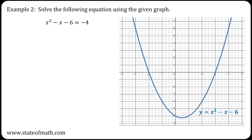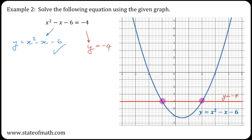For example 2, for the left-hand side I have y equals x squared minus x minus 6, which is already plotted, and for the right-hand side this time I get y equals minus 4. And if I plot this, I get the following. These graphs intersect at two points. The x-coordinates of those two points are minus 1 and 2, and these are my solutions: x equals minus 1, x equals 2.